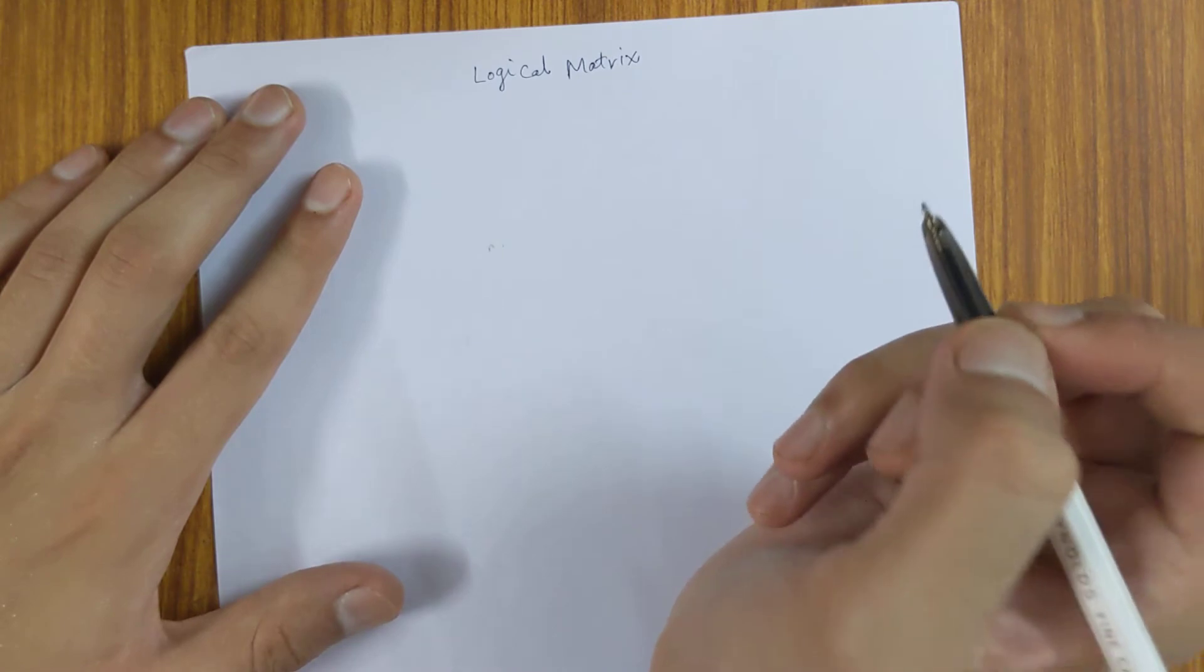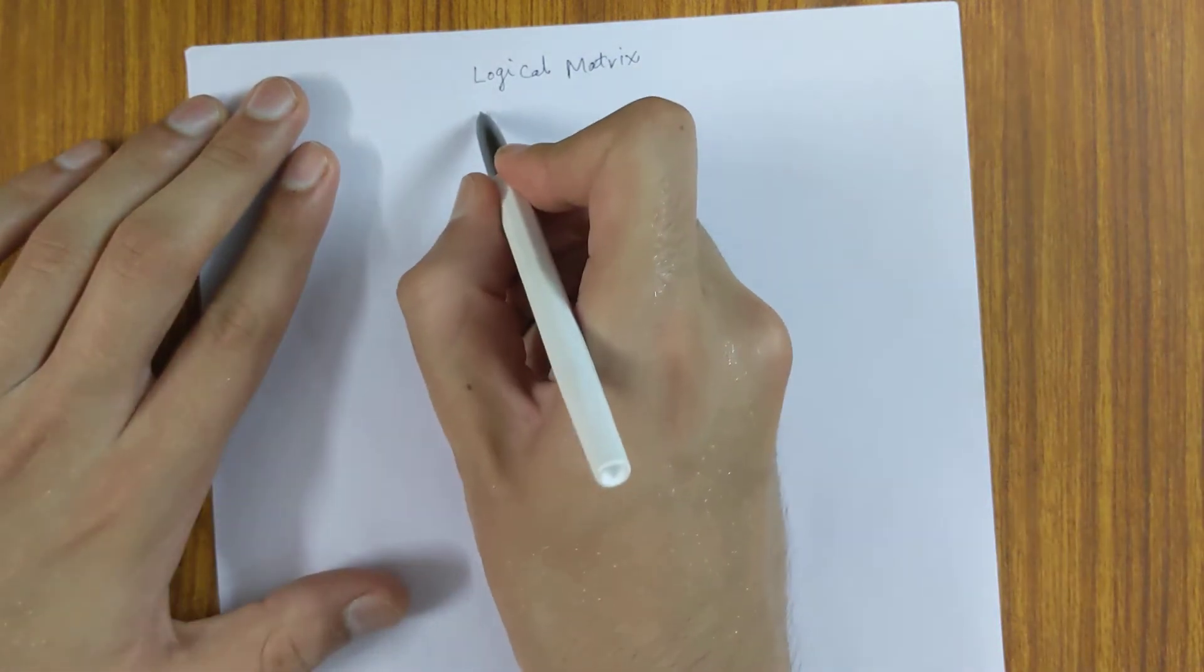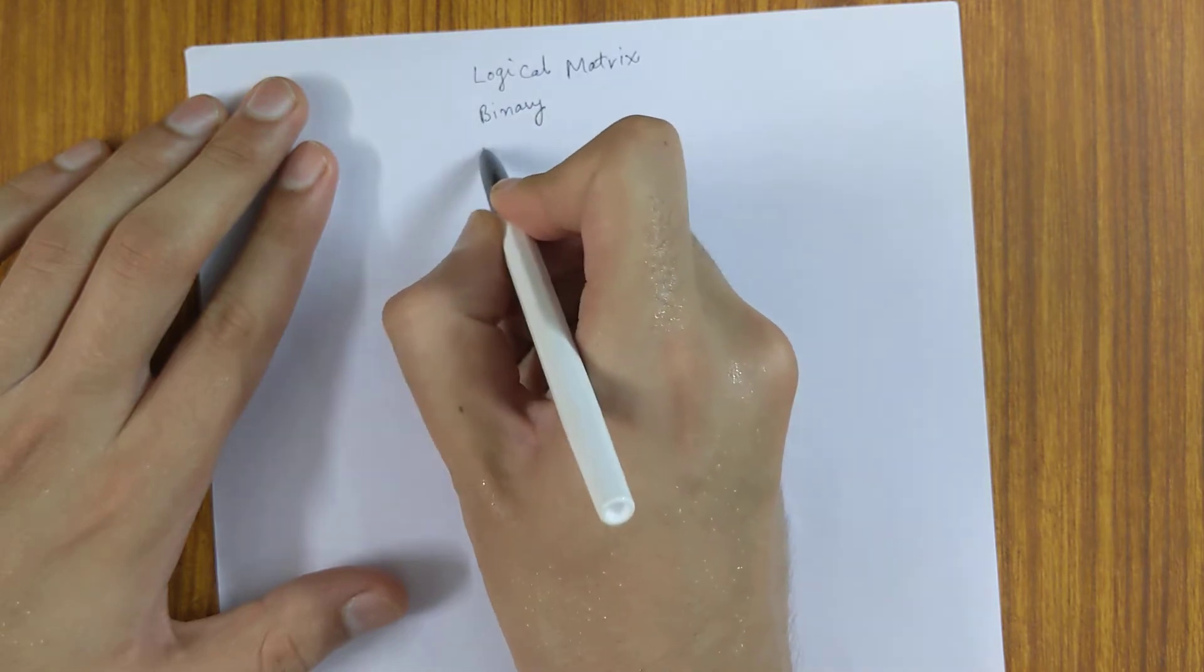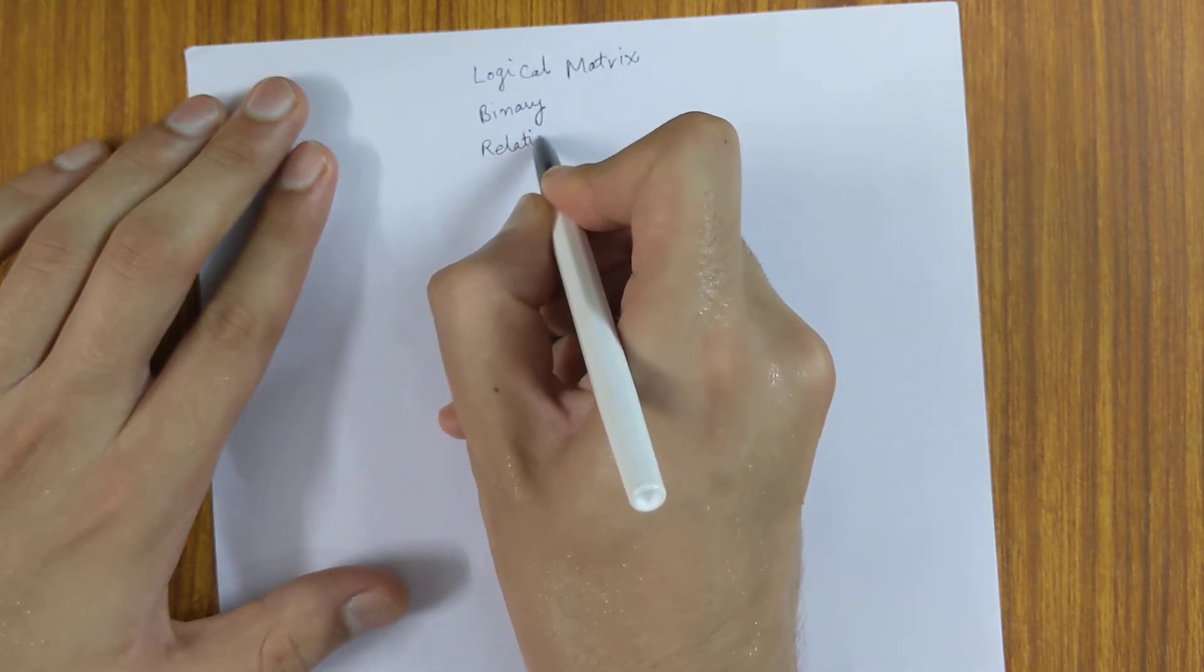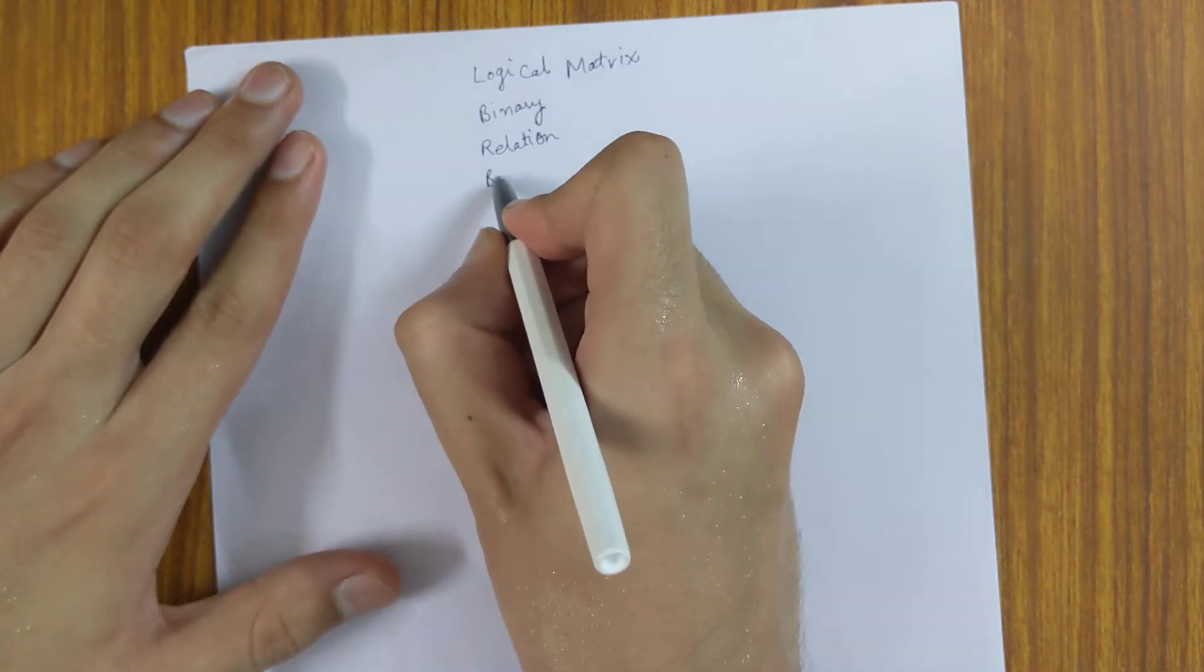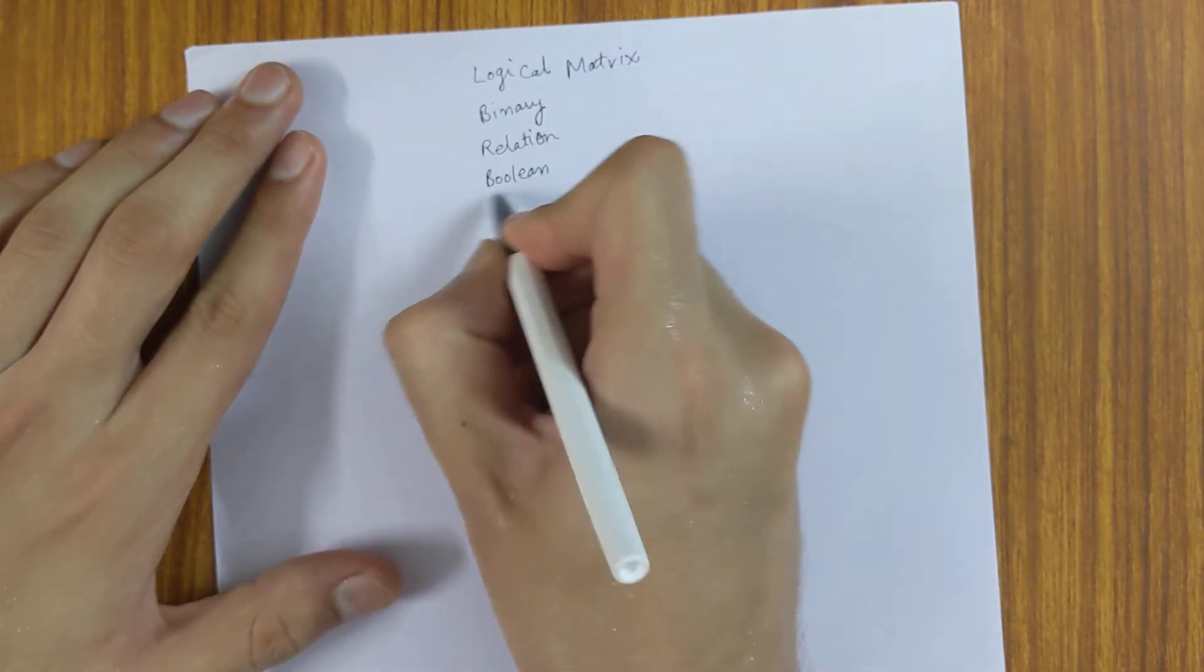This logical matrix is also known as binary matrix or relation matrix because of its application in denoting relations, or it's also called a boolean matrix.